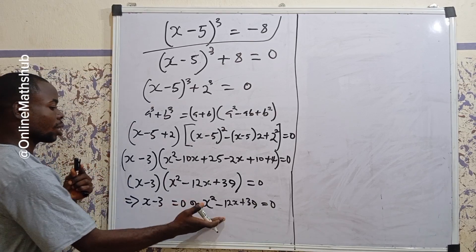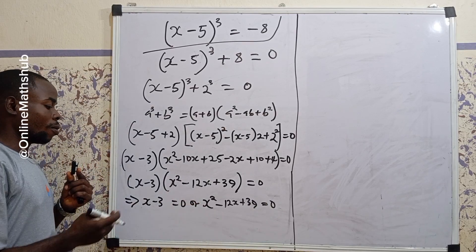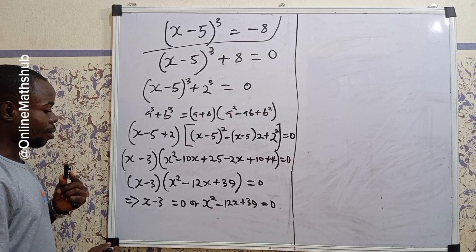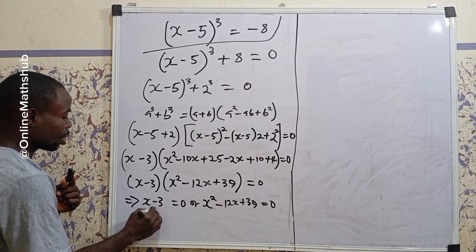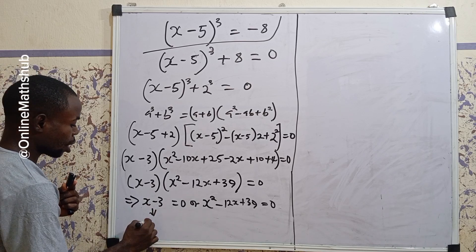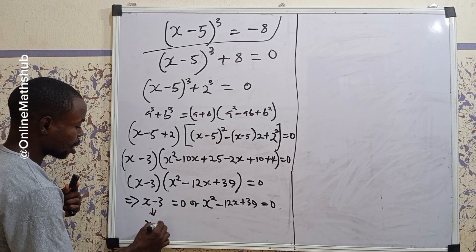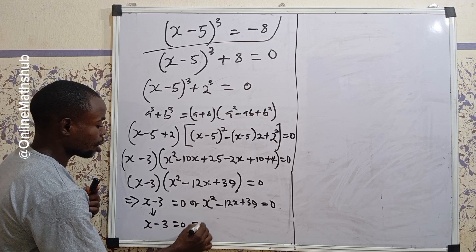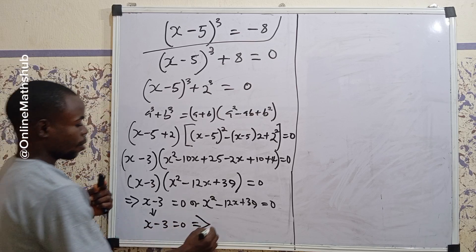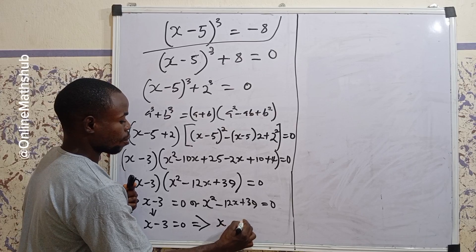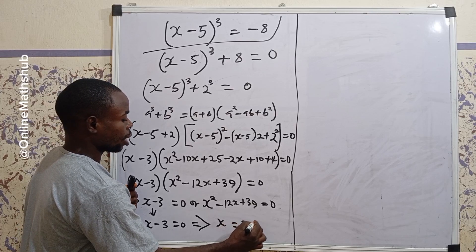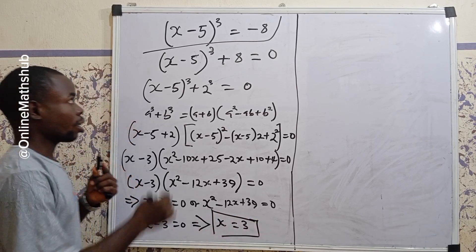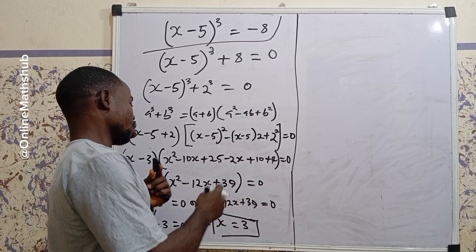Applying the zero product rule, either the first bracket equals 0 or the second bracket equals 0. Taking the first case, x minus 3 equals 0, which implies that x equals 3. This is the first solution to the equation.